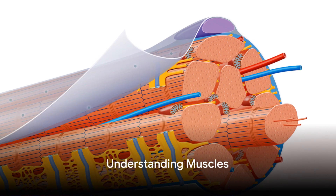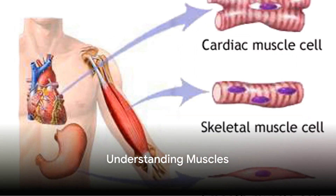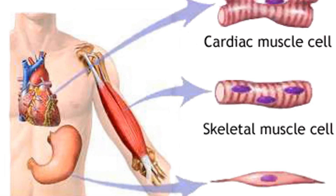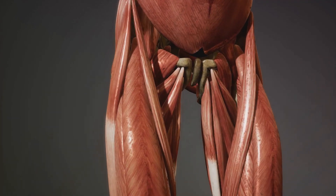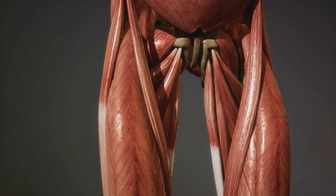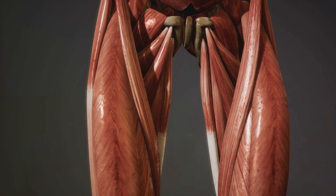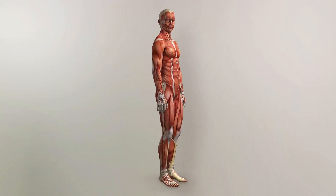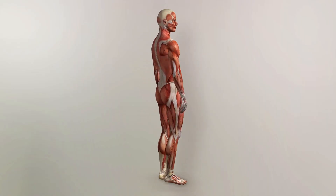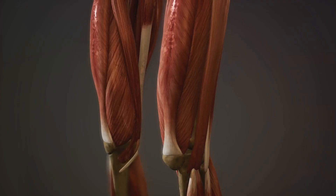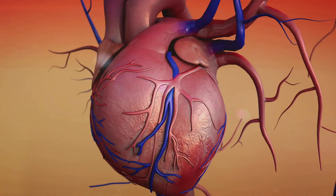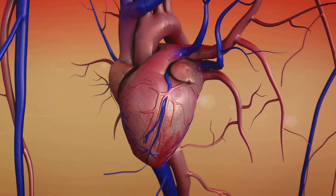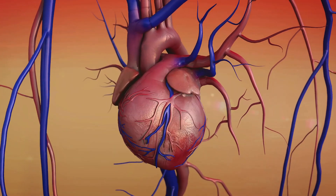Now let's talk about muscles. There are three types: skeletal, cardiac, and smooth. Skeletal muscles are what we typically think of when we talk about muscles — they are attached to bones and are responsible for voluntary movements. Cardiac muscles, found only in the heart, control the heart's contractions.